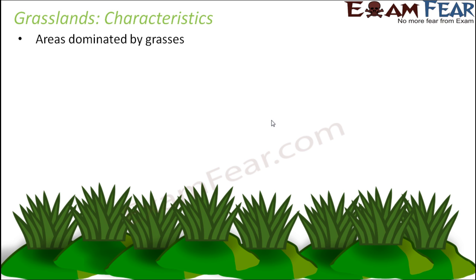Grassland, as the name suggests, refers to areas dominated by grasses. It is not necessary that grasslands can only have grasses — they support vegetation, and this vegetation can vary from very short height grasses to quite tall trees as well.